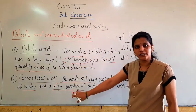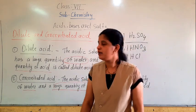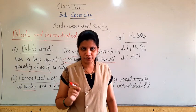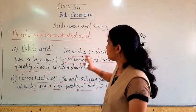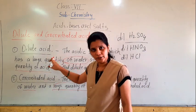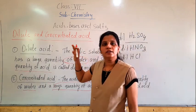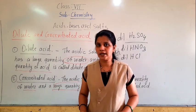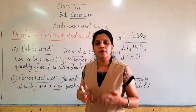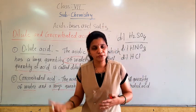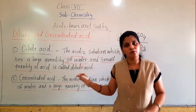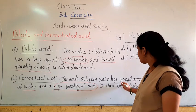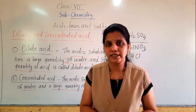Do you understand the difference between dilute acid and concentrated acid? It is very simple. Dilute acid means it contains a large quantity of water and small quantity of acid — so it is not a very strong acid. In the laboratory we are doing experiments, so we are not using concentrated acid; we are using diluted acids. For further study in graduation and post-graduation, some practicals require concentrated acid. Concentrated acid means small quantity of water and large quantity of acid is present.